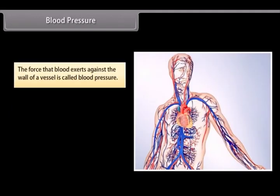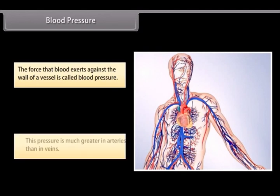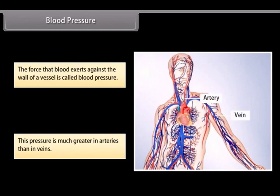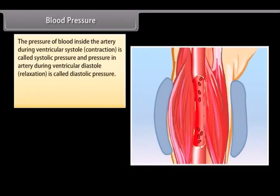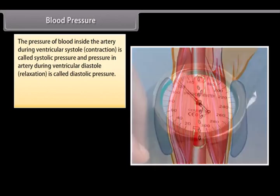Blood pressure. The force that blood exerts against the wall of a vessel is called blood pressure. This pressure is much greater in arteries than in veins. The pressure of blood inside the artery during ventricular systole or contraction is called systolic pressure.